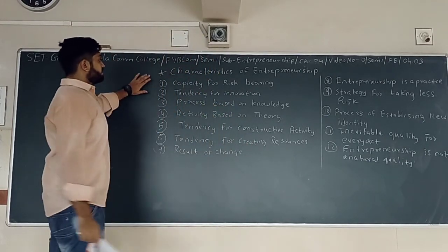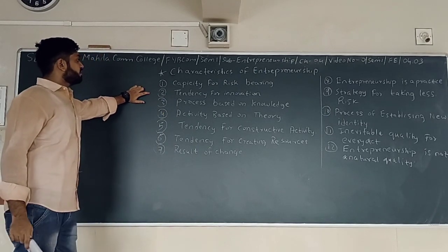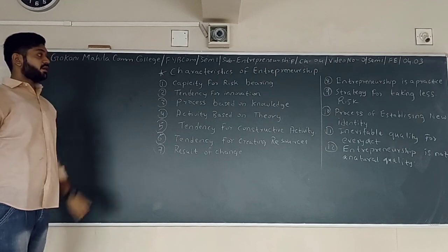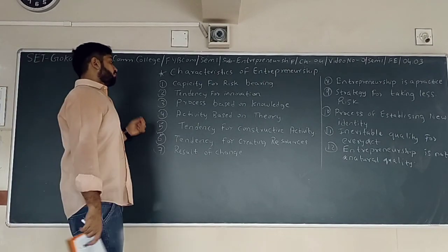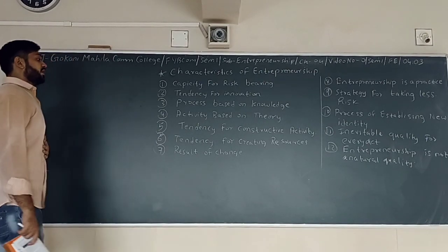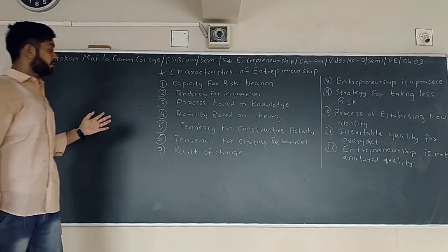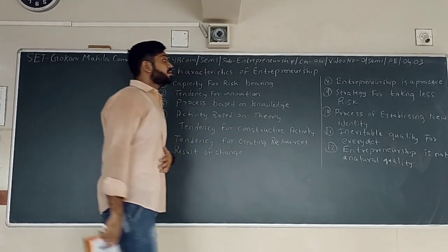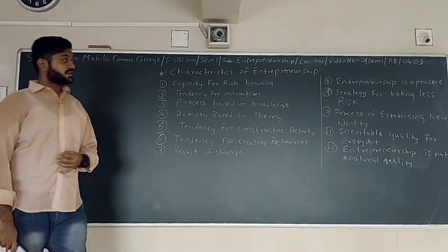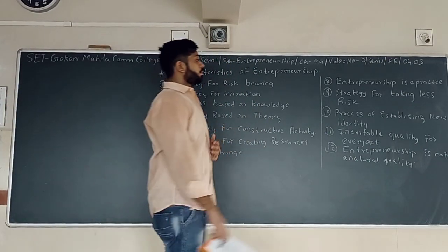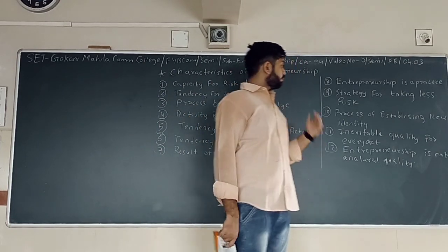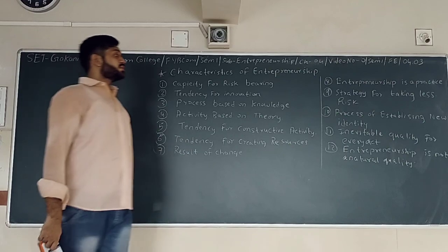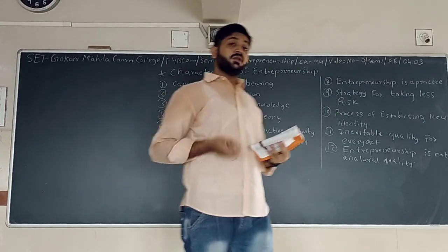So here entrepreneur is not a natural quality — you have to build that part. The first is capacity for discipline, second is training, support innovation, the process needs more knowledge, more activity and creativity. Next, training for more perspective and creativity with resources. Next: result of changes, entrepreneurship is a practice, strategy for taking less risk, process of establishing new identity, inevitable quality for every act. Point twelve: entrepreneurship is not a natural quality.